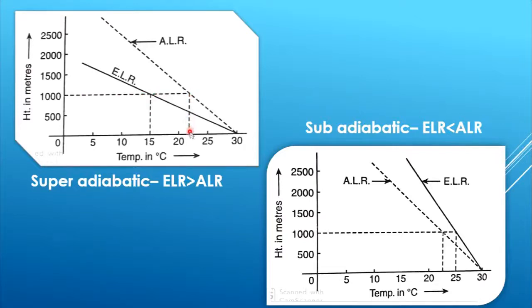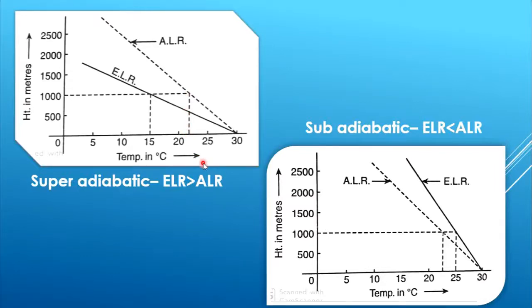At 1000 meters height the particle is having a temperature between 20 to 25 degrees, so the environment has a lower temperature than the particle. The lapse rate is higher in the case of the environment, that's why the condition is written as ELR greater than ALR. The subadiabatic situation is just the reverse: at a certain height the particle will have lower temperature than the environment, meaning the lapse rate of the particle is higher than the environment, so ELR is less than ALR.